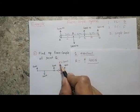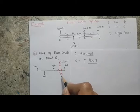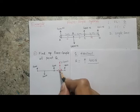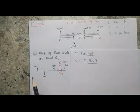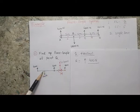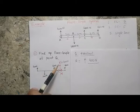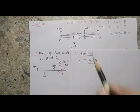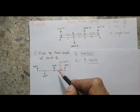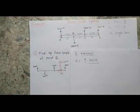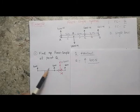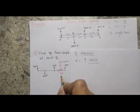When finding a force couple system at a particular point, I assume the resultant force passes through that point along with a moment acting at that point. These two — one force and one moment — replace the original four forces while producing the same effect. The equivalent force couple system gives the same effect as the original forces.